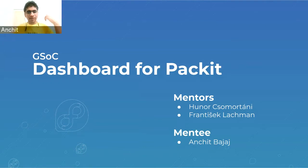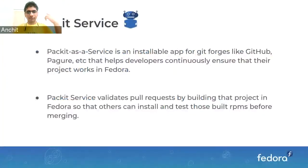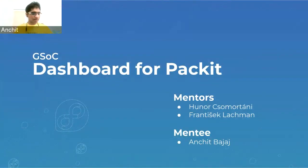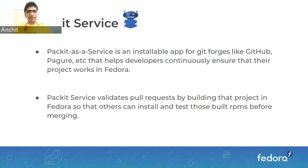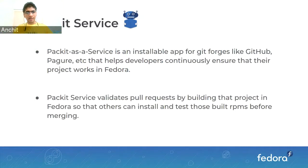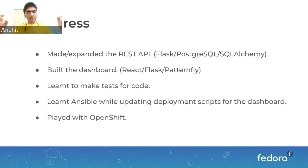Hi, I'm Anshith, and I'm working on the dashboard for Packit. My mentors are Hunar and Frantisek. The Packit service is an install-level app for Git forges like GitHub, Pagure, or GitLab. You enable it on a repository, and when you make a pull request, it validates it, builds the project in Fedora, and you can install the copr build and test it out. Maintainers can easily see if it's working and approve or merge the pull request. Packit service also helps you work in source-git instead of dist-git.